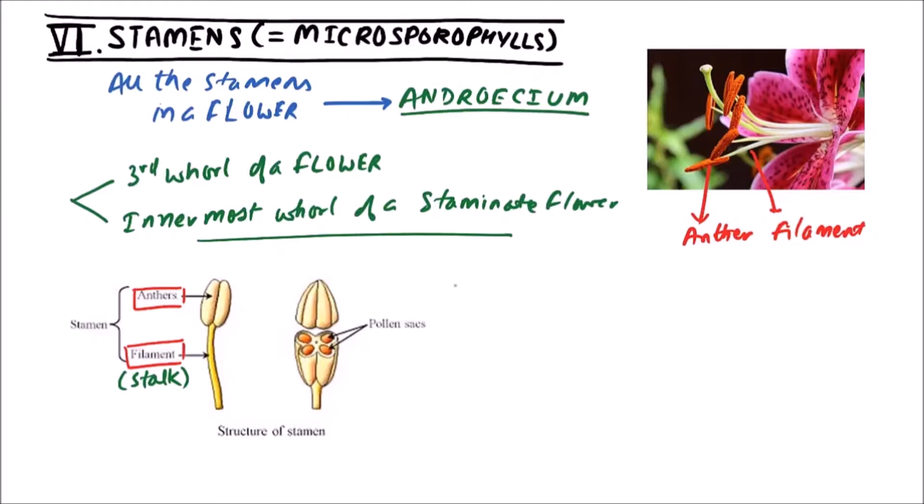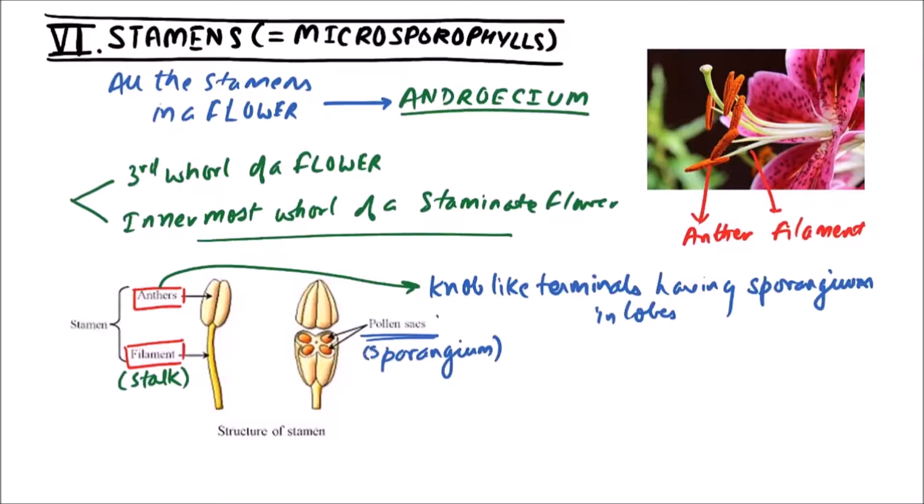Now anthers. Anthers are basically the knob-like terminals having sporangiums in lobes. Now if we take this section, some pollen sacs are there, which can be termed as sporangium.